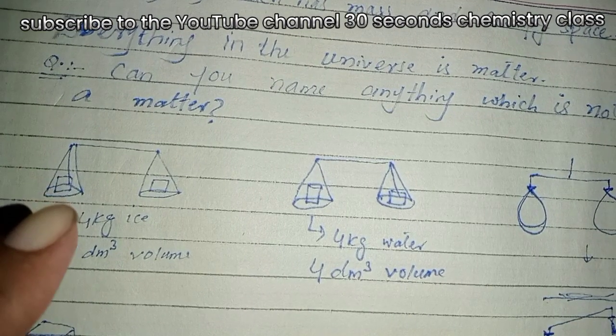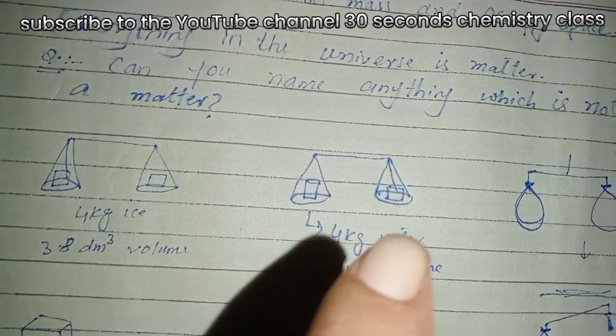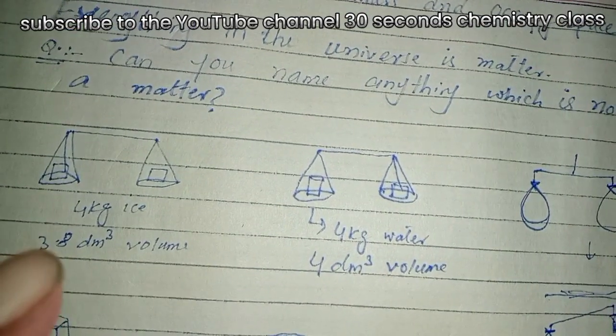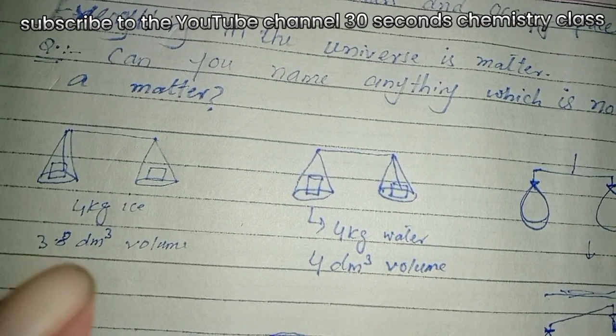This is 4 kg of ice. This is 4 kg of water. And this is air. Its volume is 3.8 dm cube.